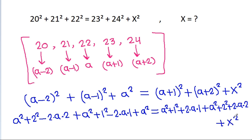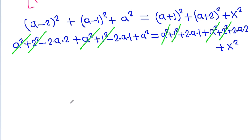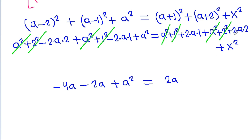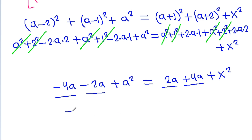And a squared plus 1 squared terms get cancelled, and a squared plus 2 squared terms get cancelled. So it is minus 4a and minus 2 times a times 1, plus 2 squared, plus 2 squared, plus x squared. And minus 4a minus 2a is minus 6a; minus 2a, minus 2a is minus 8a; minus 4a will be minus 10a.